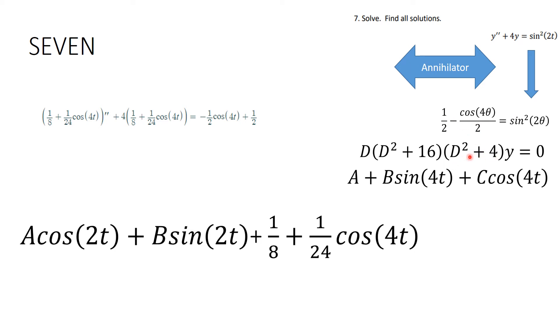So this was what you had for your homogeneous part, and then this is annihilating the cosine 4 theta term, and this is annihilating the 1 half.